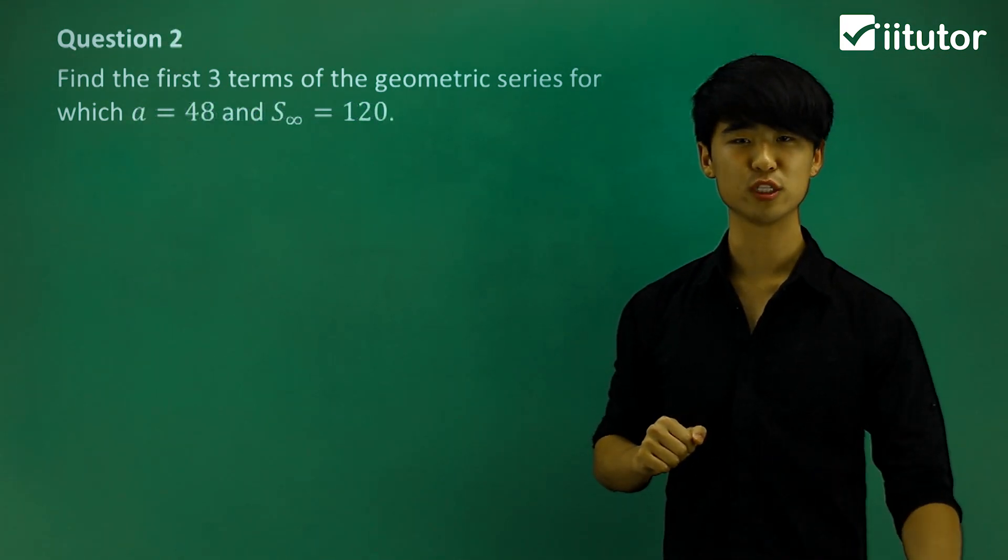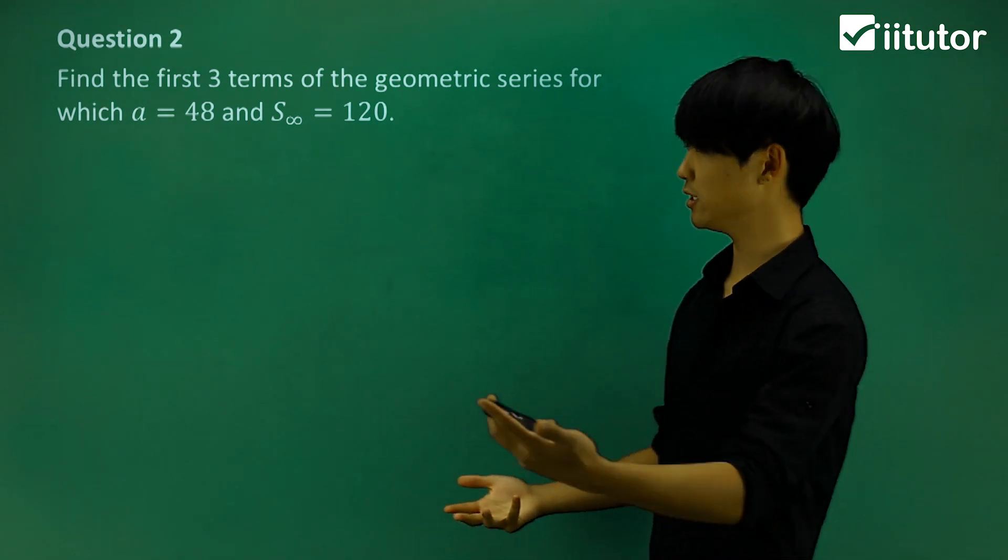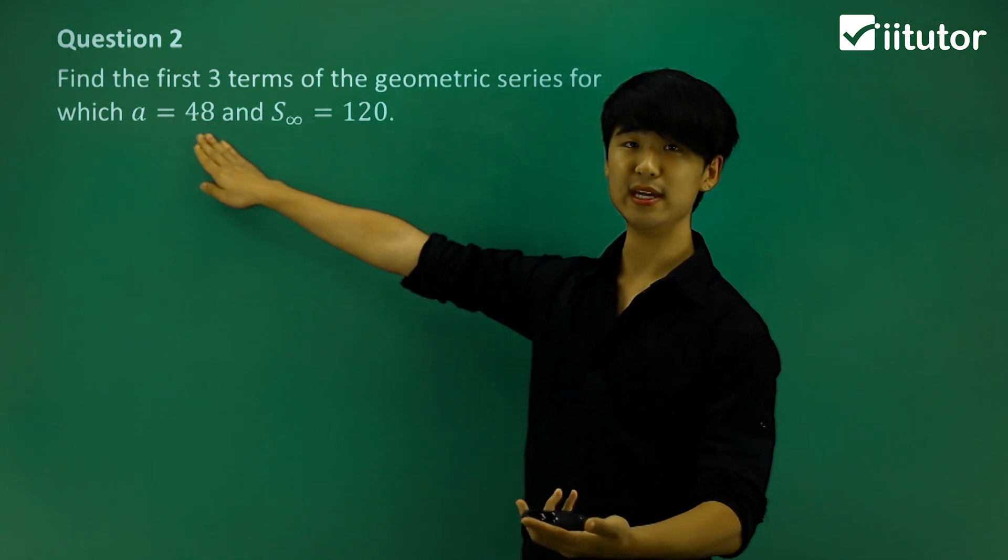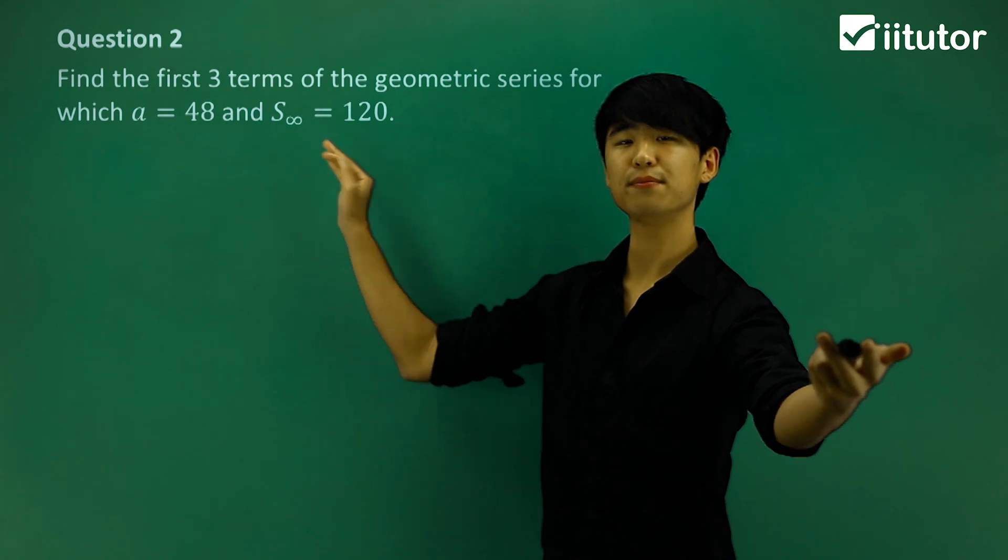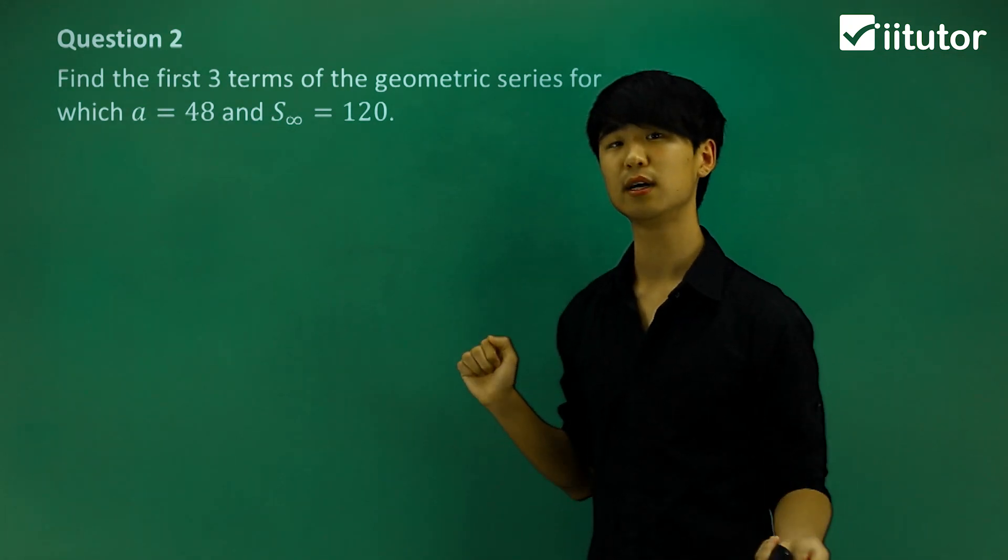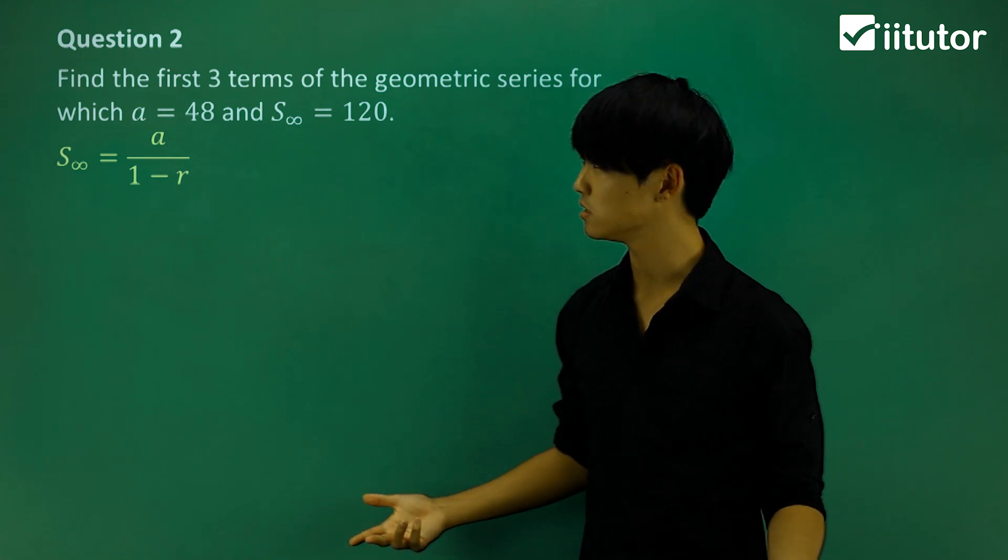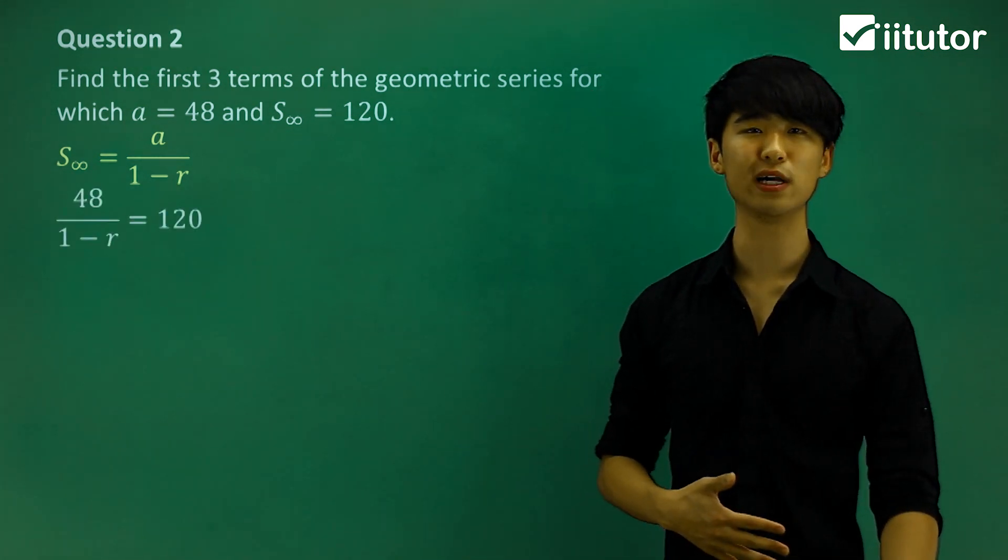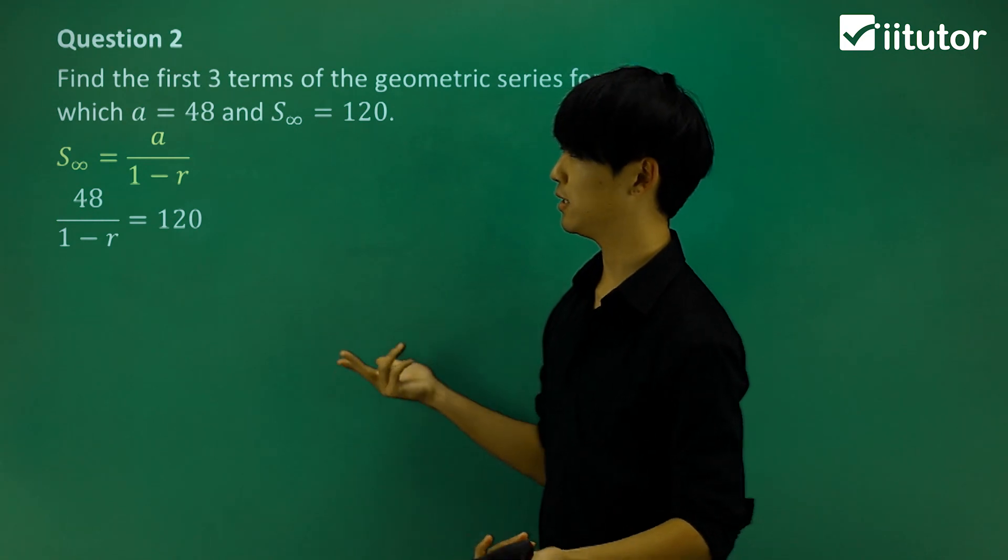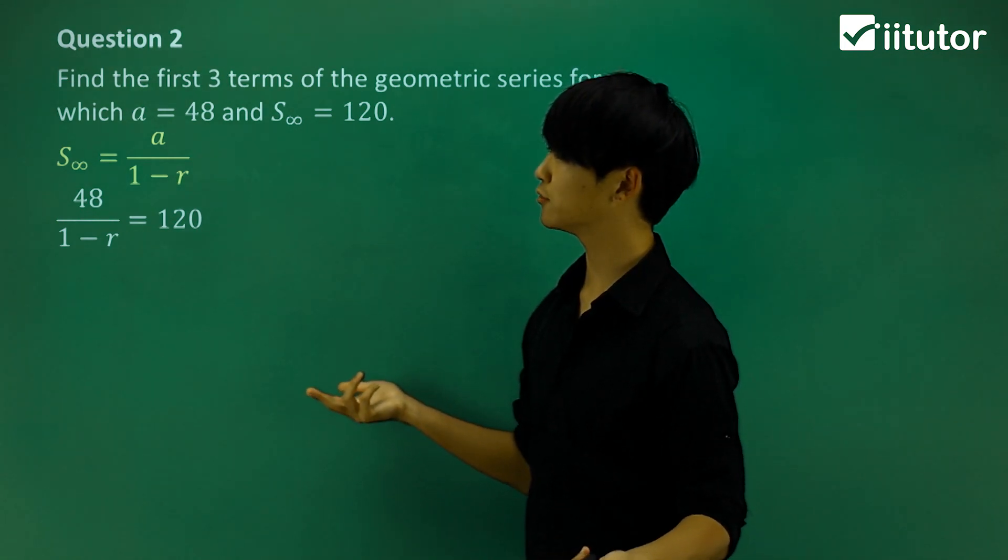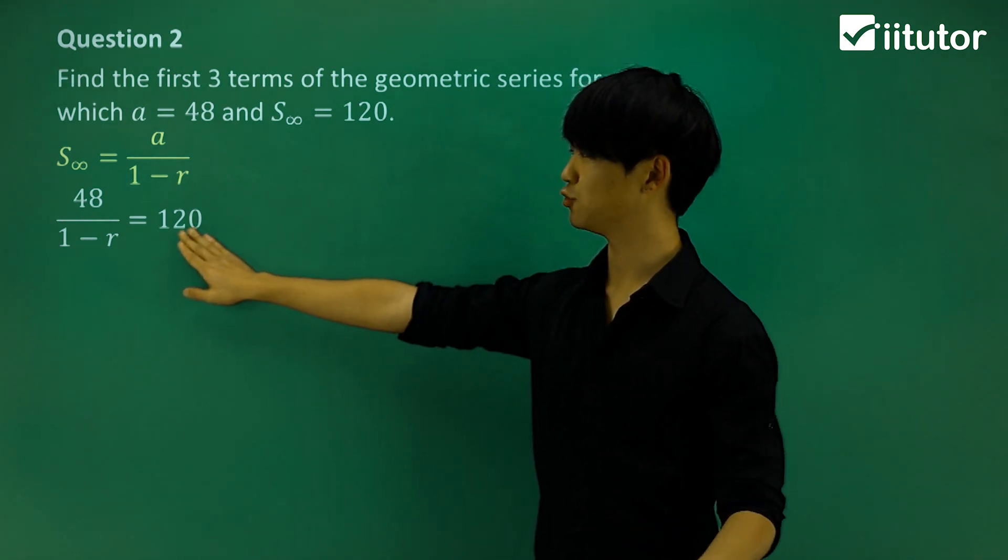Now looking at question two, find the first three terms of the geometric series for which a, the first term, equals 48 and the sum to infinity is 120. In this question they gave us a and the sum. Let's put those values into the limiting sum formula: a equals 48 and the sum is 120.